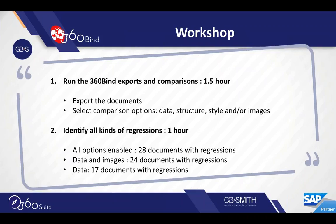They then identified what kinds of regressions they had. It took about an hour to identify those. There were 28 documents with regressions, and 24 with regressions involving data and image issues. When they looked at regressions with just data, they only had 17 documents with regressions.